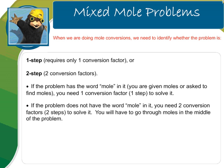When we're doing mole conversions, we need to be able to identify whether the problem is a one-step or a two-step problem. A one-step problem requires only one conversion factor. A two-step problem requires two conversion factors. If the problem has the word mole in it — you are given moles or you're asked to find moles — you'll only need one conversion factor. If the problem does not have the word mole in it, you will need two conversion factors. So if it does have mole: one conversion factor. Does not? Two.